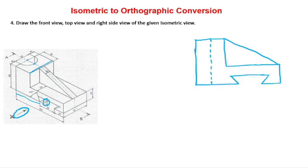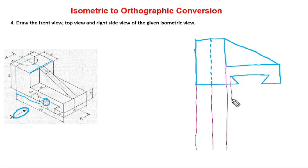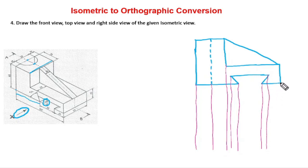For the semicircle, I am going to draw the projection lines for drawing the top view. I am going to draw the projection lines from here to here. This is the projection line for the semicircle, and this is the projection line for this block. These projection lines help us easily identify the position in the top view.